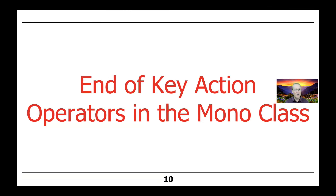That's the end of the overview of the action operator we're going to cover for the Mono class. There are other action operators as well, and they all work very much the same way — they're just called under different circumstances. This one is called when something completes successfully, to give a chance to have a side effect invoked.